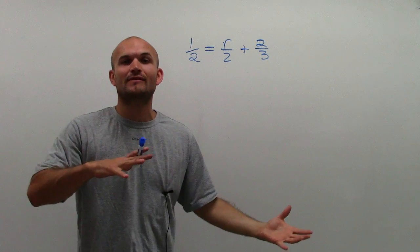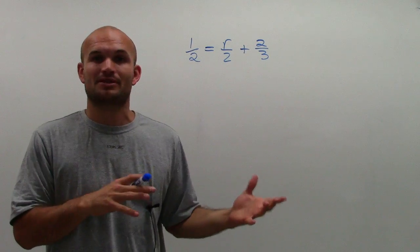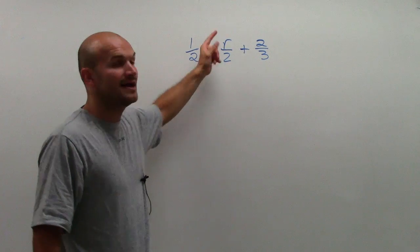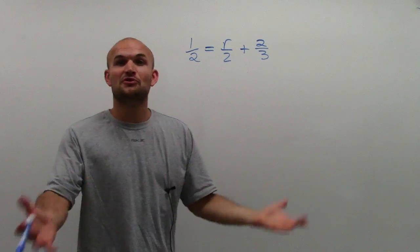So if you want to use the reverse order of operations and inverse operations, meaning undo adding two thirds on both sides, and then undo dividing by two by multiplying by two on both sides, you can do that.